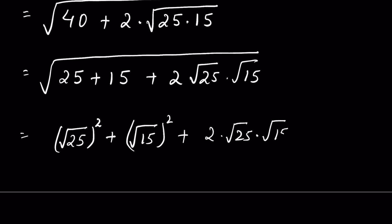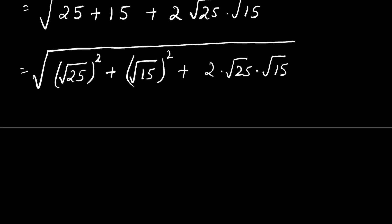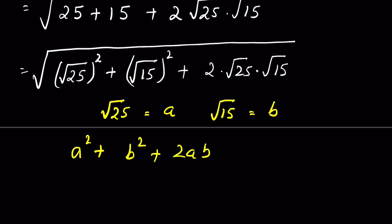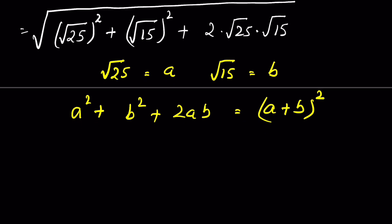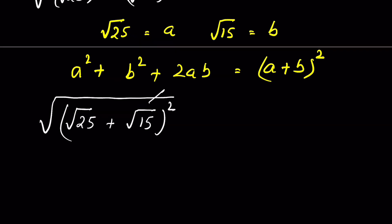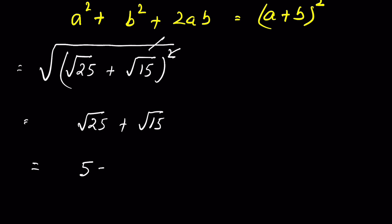If we consider a = √25 and b = √15, then this expression is in the form a² + b² + 2ab, which equals (a + b)². So we can write it as √((√25 + √15)²), which simplifies to √25 + √15. Since √25 = 5, our final answer is 5 + √15.